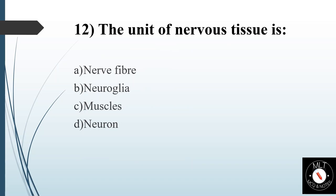Twelfth question. The unit of nervous tissue is? Option A: Nerve fiber. Option B: Neuroglia. Option C: Muscles. Option D: Neurons. Answer is Option D: Neurons.